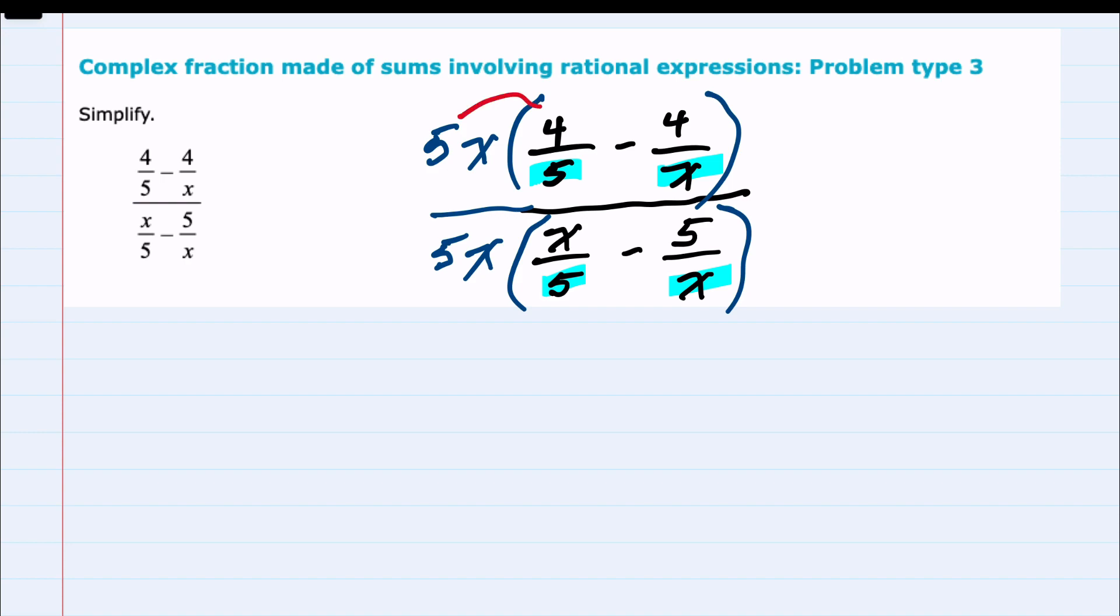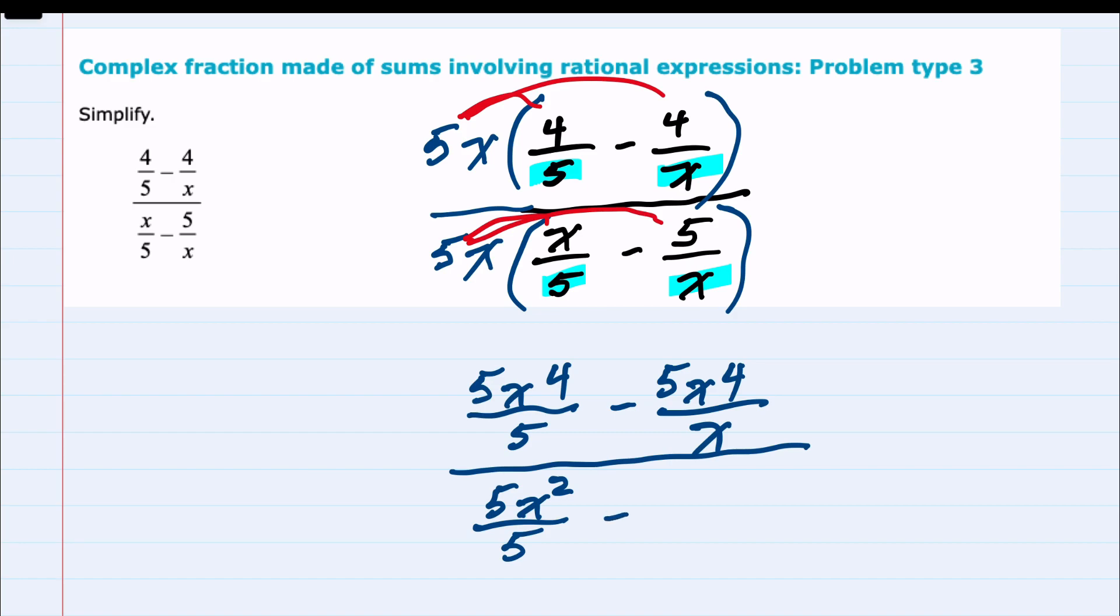Writing that out we can see we have 5x times 4 over 5 and then a negative 5x times 4 over x. This is our new numerator. In the denominator when we distribute we have 5x times x, so 5x squared over 5 and then 5x times a negative 5 over x.